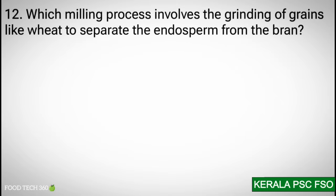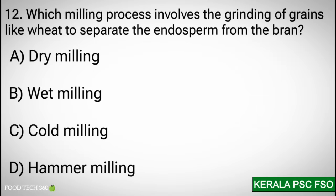Question 12: Which milling process involves the grinding of grains like wheat to separate the endosperm from the bran? Options: a) dry milling, b) wet milling, c) cold milling, d) hammer milling.